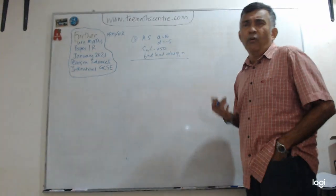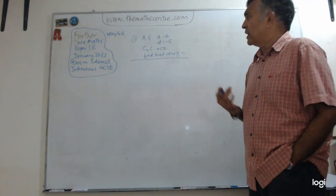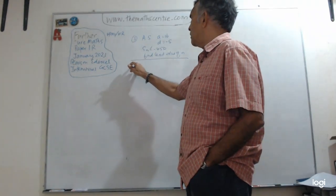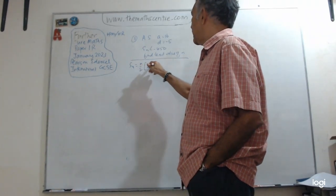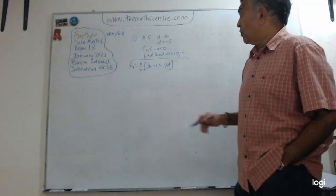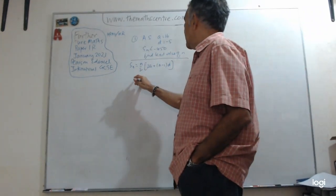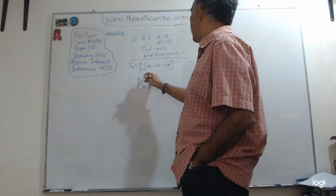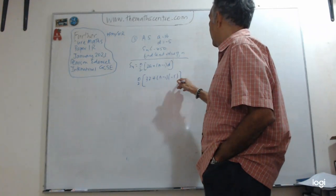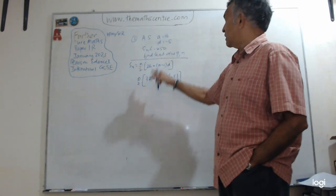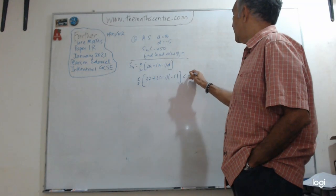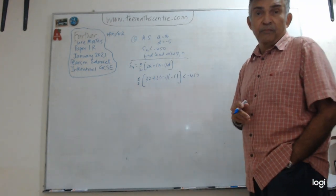This is a formula-driven problem and involves a little bit of inequalities that you can easily solve. We know that S_n equals n over 2 times (2a + (n−1)d). Here 2a is 32, and d is minus 5, so we have n over 2 times (32 + (n−1)(−5)). This is given as less than negative 450.